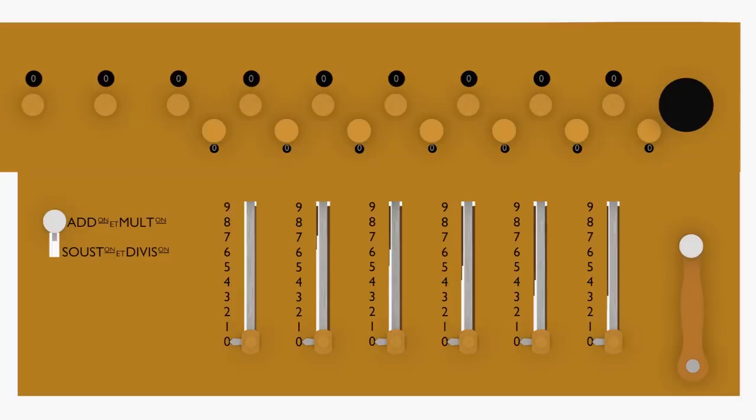Values are entered using sliders set to each digit. Turning the crank adds or subtracts the input value with the accumulator, depending on the setting of the operation control lever.